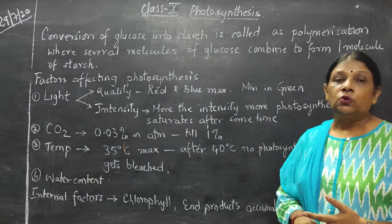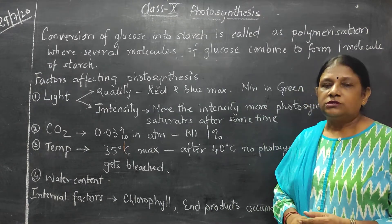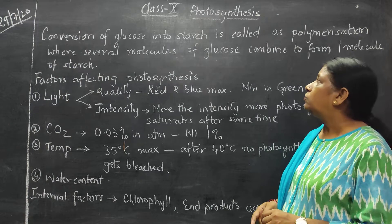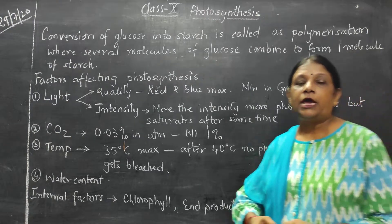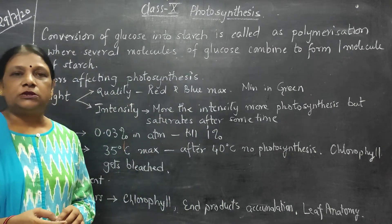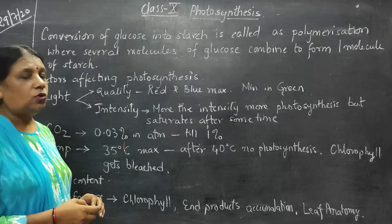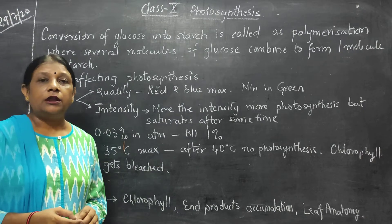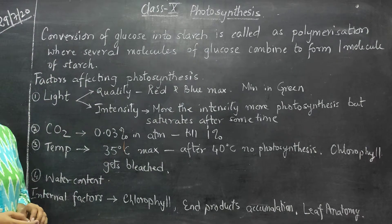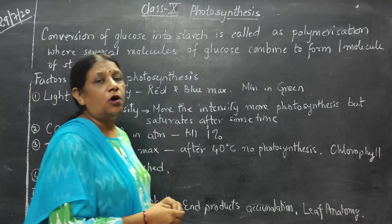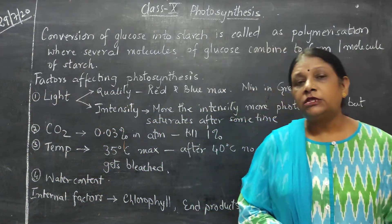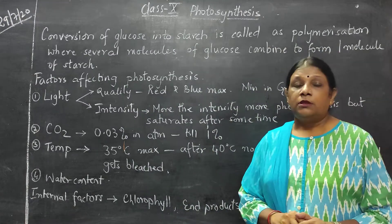How is glucose converted into starch and stored in the plants? The conversion of glucose into starch is called polymerization. What is polymerization? Polymerization is the conversion of glucose into starch. Several molecules of glucose combine to form one molecule of starch. It is called polymerization.